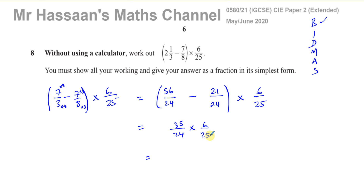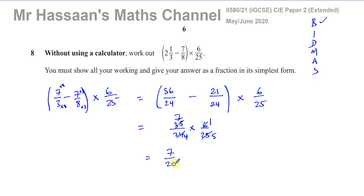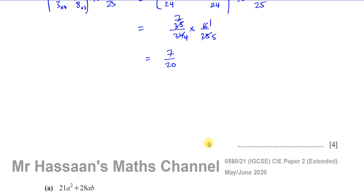35 and 25 both have a common factor of 5: 35 divided by 5 is 7, and 25 divided by 5 is 5. Also, 6 and 24 share a factor of 6: 6 divided by 6 is 1, and 24 divided by 6 is 4. So the numerator becomes 7 times 1, and the denominator becomes 4 times 5 — giving 7 over 20, now in its simplest form.